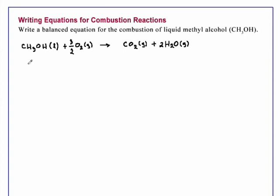So what we will do is multiply this entire equation by two. So our final balanced equation will read 2CH3OH liquid plus 3O2 gaseous reacts to form 2CO2 gaseous plus 4H2O gaseous.